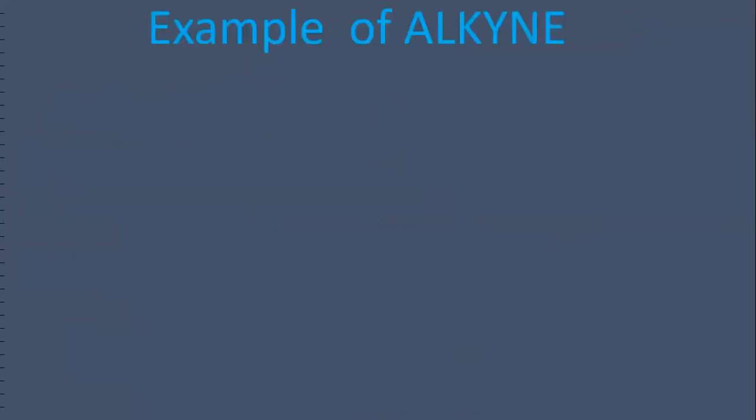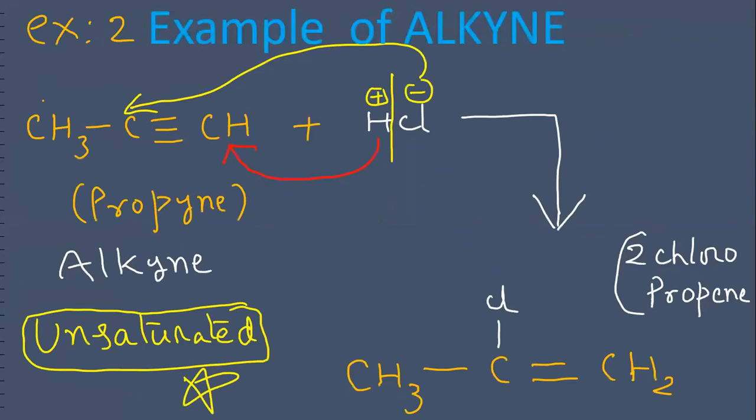Example of alkyne. Propyne. See here, the negative radical is going to the carbon with the least number of hydrogen atoms. We get 2-chloropropene.